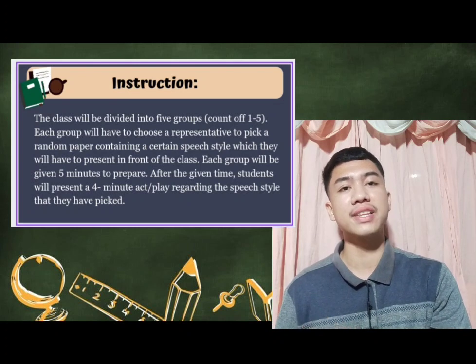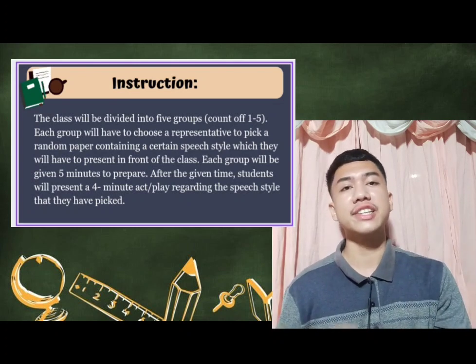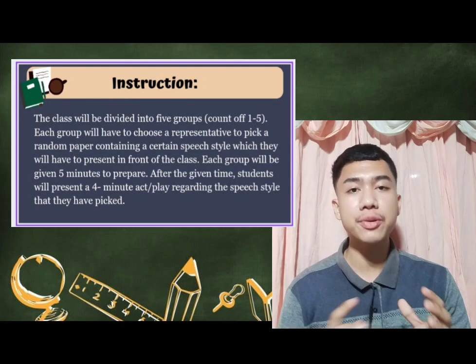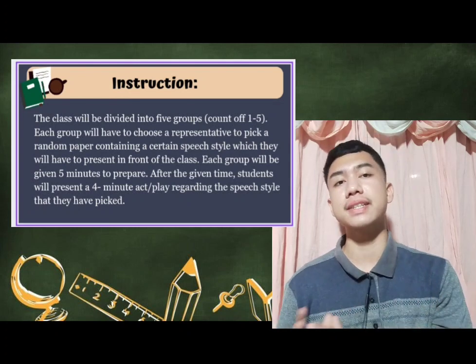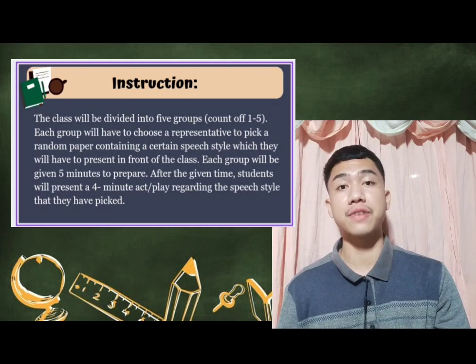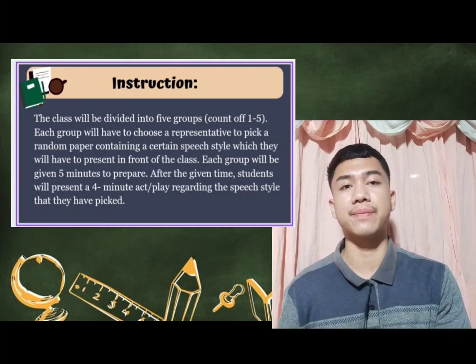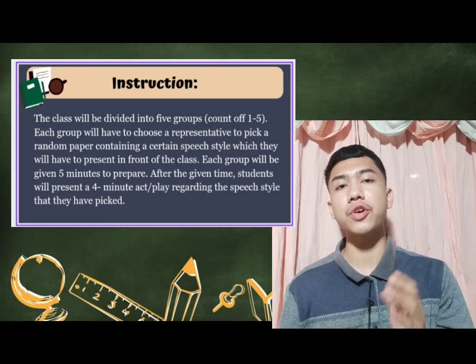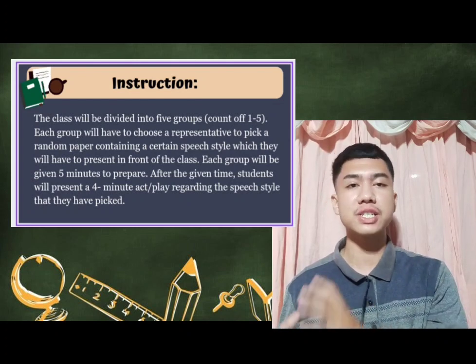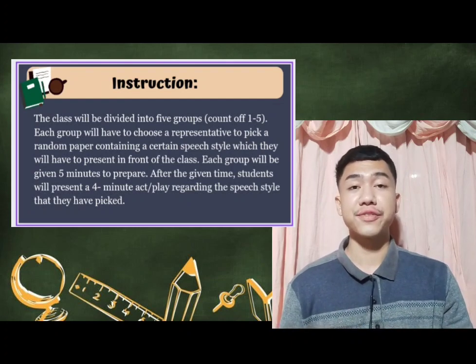This time around, we will have an activity. We will be having a roleplay about the different speech styles. The class will be divided into five groups. Each group will choose a representative to pick a random paper containing a certain speech style, which you will have to present in front of the class. Each group will be given five minutes to prepare, then present a four-minute skit or play regarding the speech style you have picked. Here is our criteria for you to be guided.